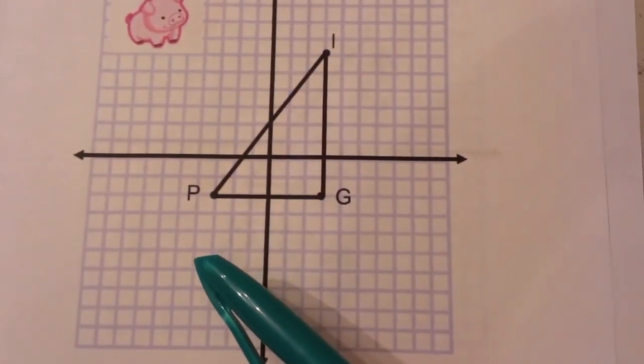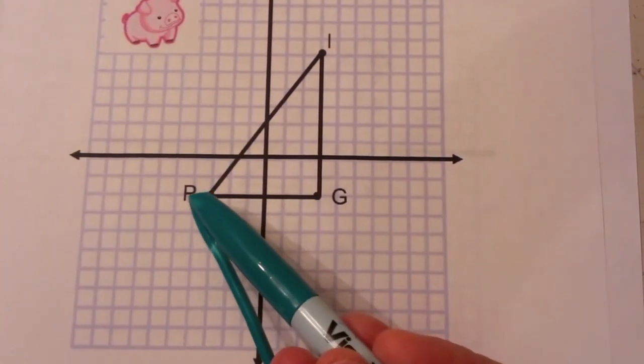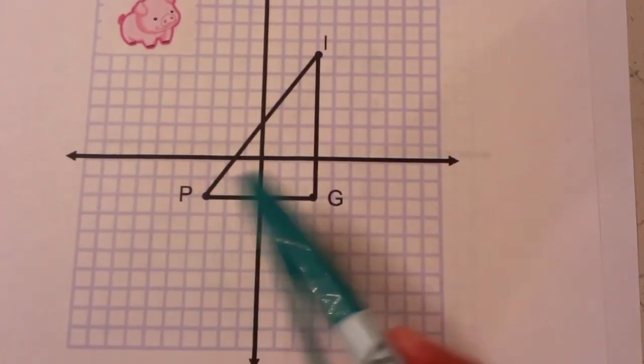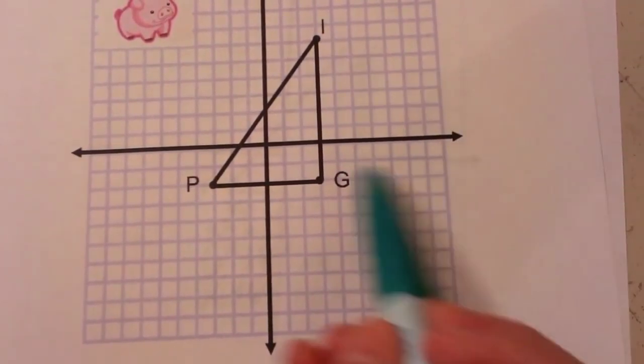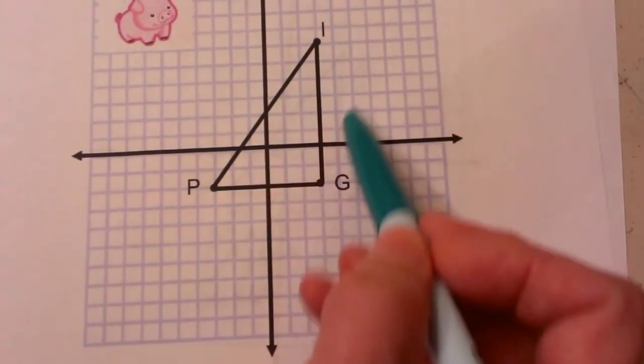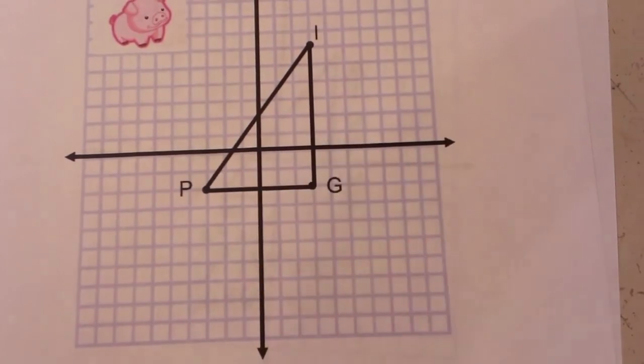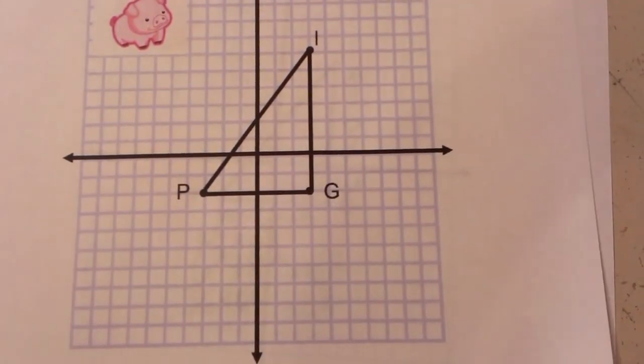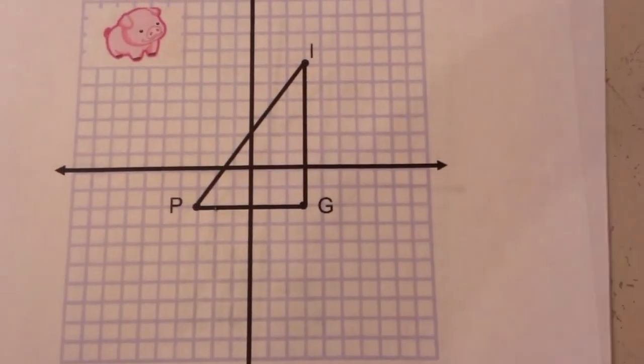We're going to learn how to use the Pythagorean theorem to find distance, because the distance formula is just the Pythagorean theorem. I've given you the triangle PIG and we're going to find not only the distance of each side, but also we're going to find the perimeter of PIG.